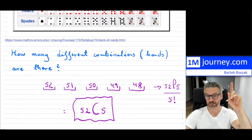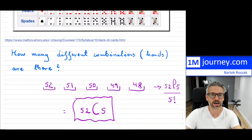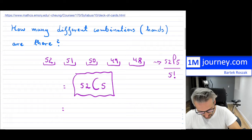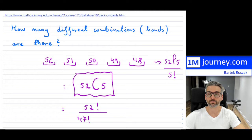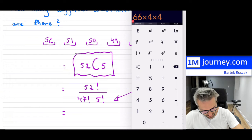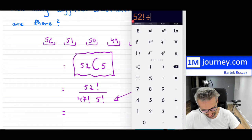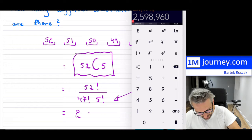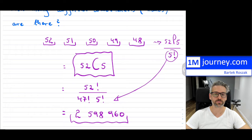Now if you've forgotten about combinations, I did an introduction and some samples — I'll put a link above. This is the ultimate question: that's how many possible hands there are. It's quite a lot. This equals 52 factorial divided by 47 factorial — because it's 52 minus 5 — times 5 factorial. So: 52 factorial divided by 47 factorial times 5 factorial, and that gives us exactly 2,598,960 different types of hands.